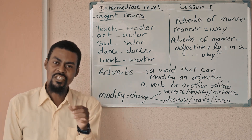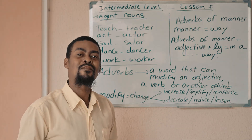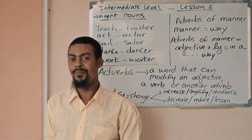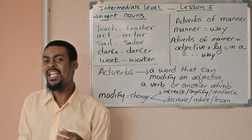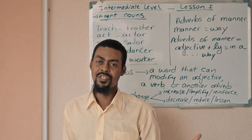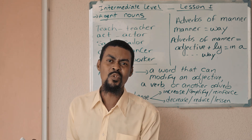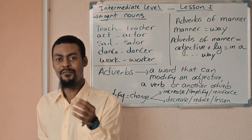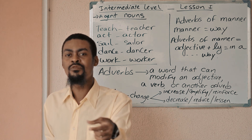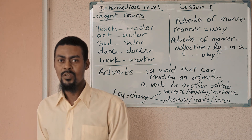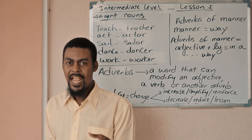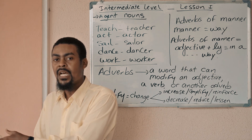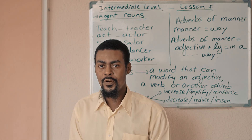An agent noun is usually a noun that is formed from a verb by just adding a suffix of two or three letters to this verb to turn it into a noun. We call this noun an agent noun because it comes from a verb.